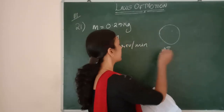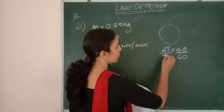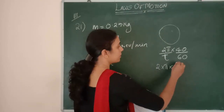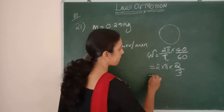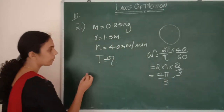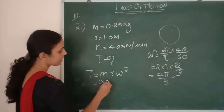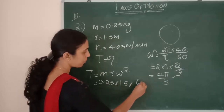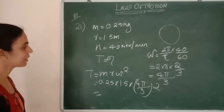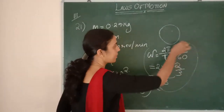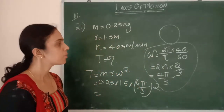Tension T = m*r*ω² = 0.25 × 1.5 × (4π/3)². Substituting these values gives the tension in the string. The key step is converting revolutions per minute to angular velocity: multiply revolutions per second by 2π to get ω = 4π/3 rad/s.